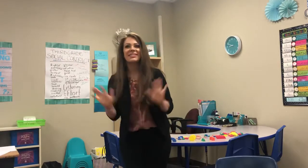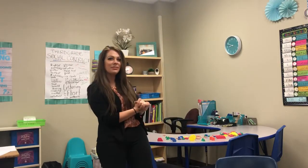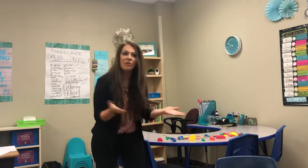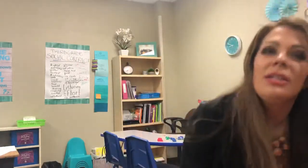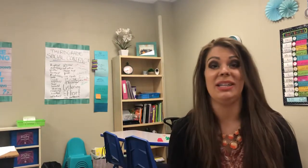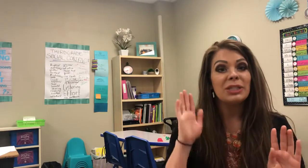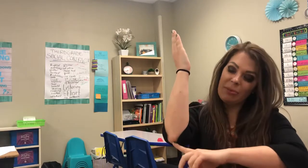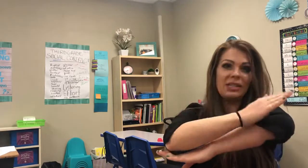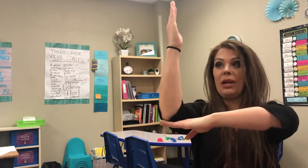Hi! I see you've noticed my shape collection. Before we talk about shapes, we're going to have to talk about lines and angles. Angles are formed by two rays with the same endpoint. A right angle makes a square corner.